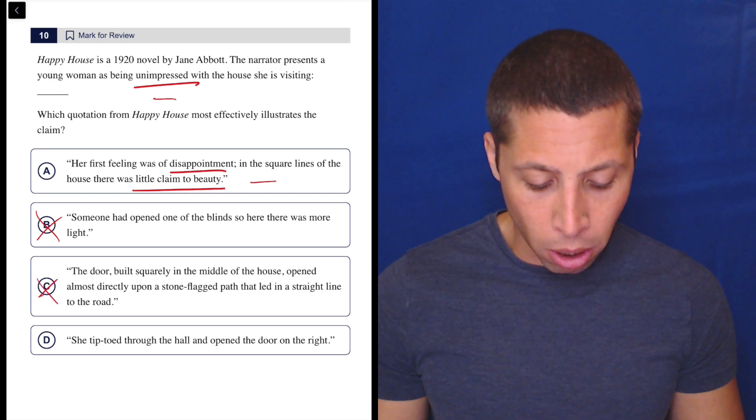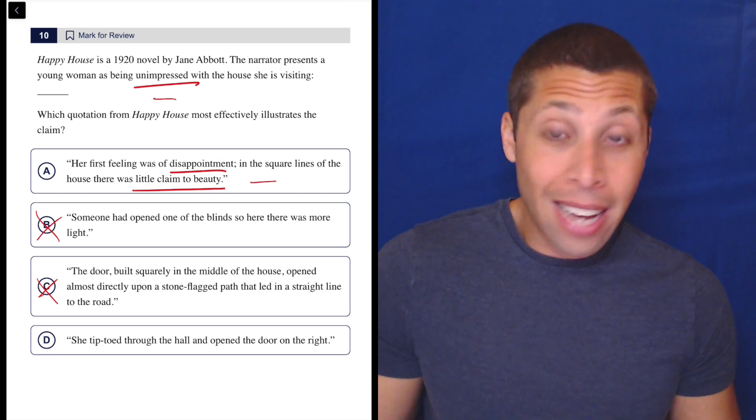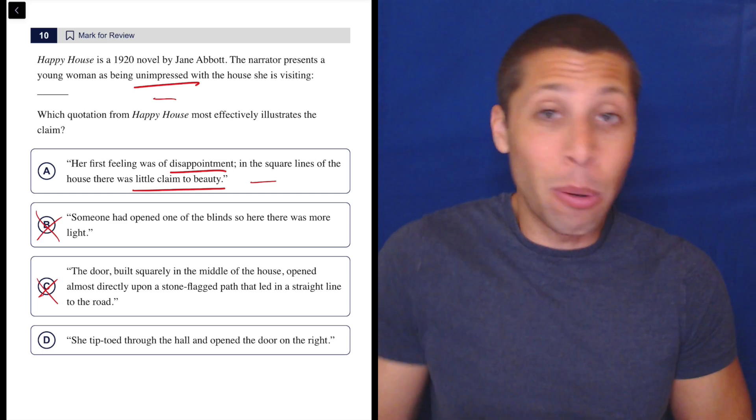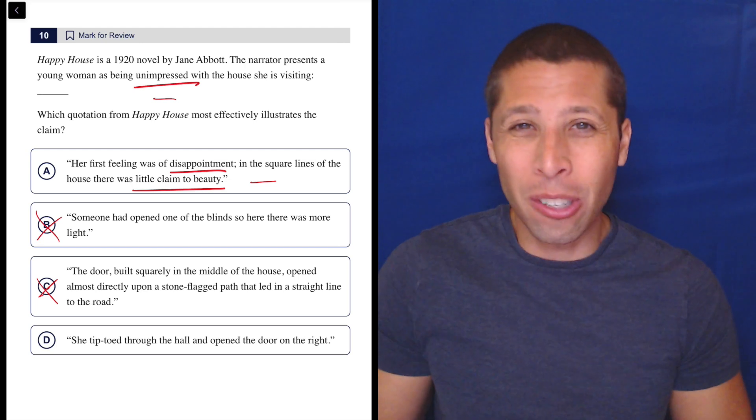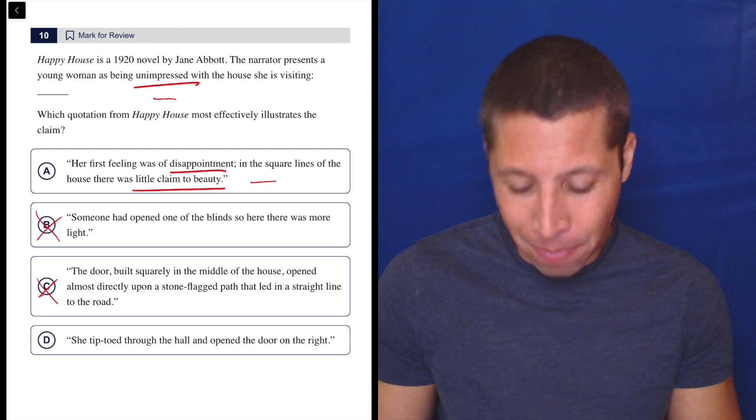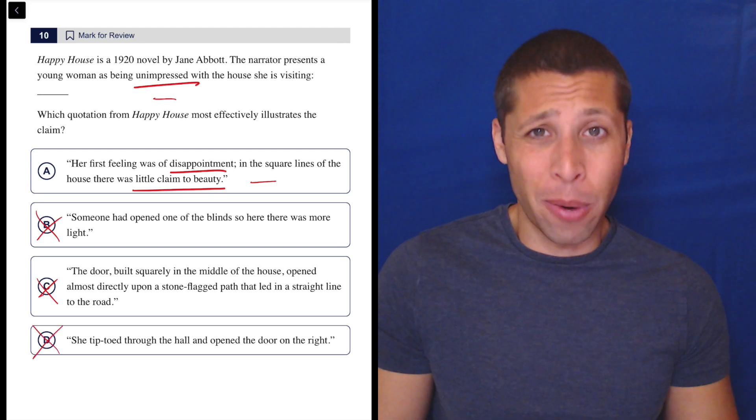Option D: She tiptoed through the hall and opened the door on the right. Again, what is she thinking? I have no idea. Tiptoeing? That's maybe a little bit descriptive, but does that mean she's unimpressed? Do you tiptoe when you're unimpressed by something? Not in any kind of way that I think of.